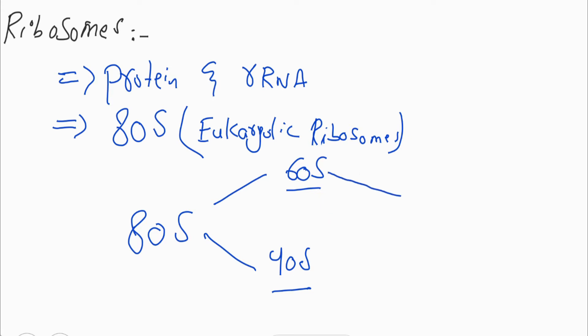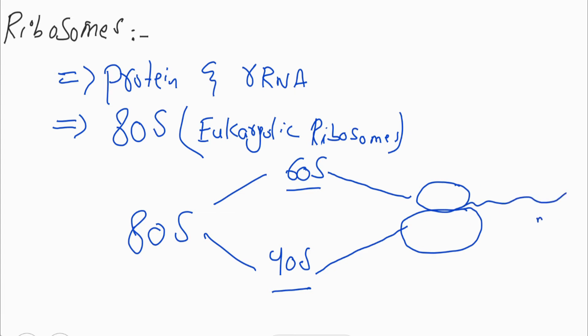These two subunits, 60S and 40S, come together during the process of translation when they bind to the messenger RNA near its five prime end. After binding, they read the nucleotide sequence from five prime to three prime direction and synthesize proteins.